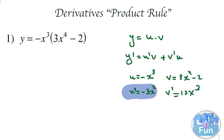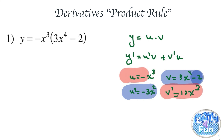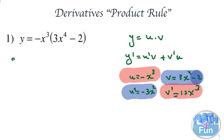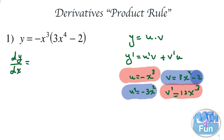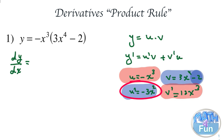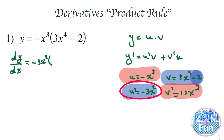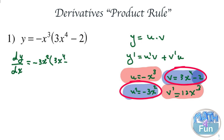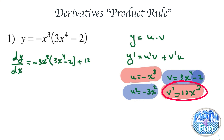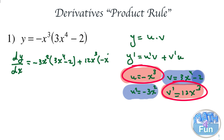Now multiply u prime by v and v prime by u and add them together. So y prime equals u prime v plus v prime u: that is minus 3x squared multiplied by 3x to the power 4 minus 2, plus 12x cubed multiplied by minus x cubed.